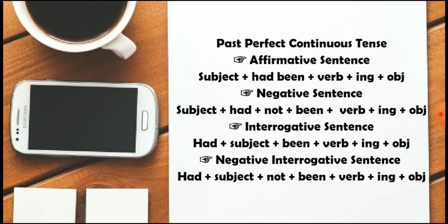The past perfect continuous tense is also known as the past perfect progressive tense. It shows an action that started in the past and continued up until another time in the past. The past perfect continuous tense is constructed using 'had been' plus the verb's present participle — for example, root plus '-ing'.